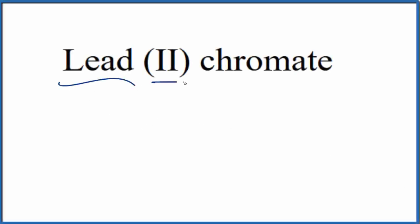To write the formula for lead (II) chromate, let's first write the element symbol for lead here. So lead, that's just Pb.